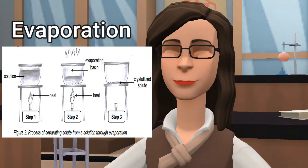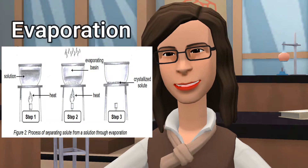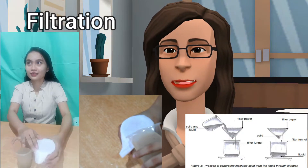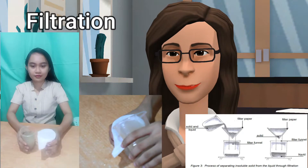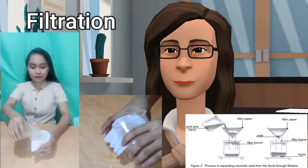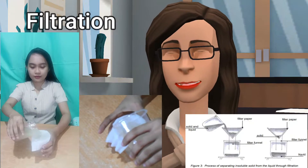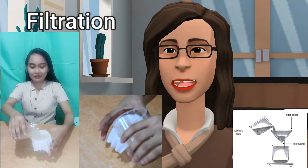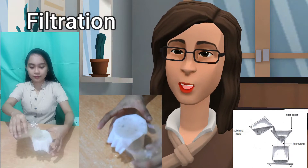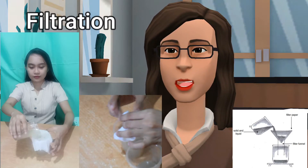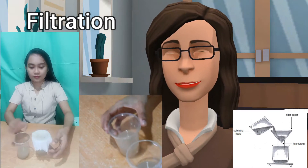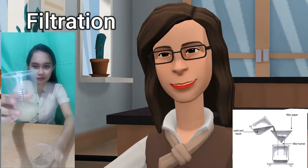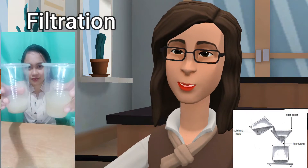When the liquid evaporates, it leaves behind the solid components of the solution. Filtration: A mixture of liquid and tiny particles of solid which have not been dissolved can be separated through filtration. A filter paper or cheesecloth is used to separate the suspended particles from the liquid. It has tiny pores where the liquid can pass through. The solid particles left behind are called residue, while the liquid that passes through is called the filtrate.